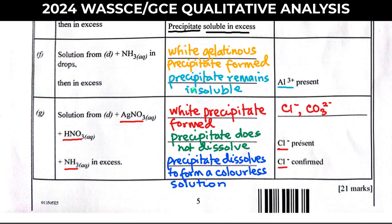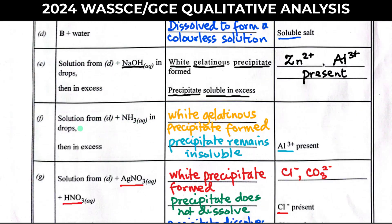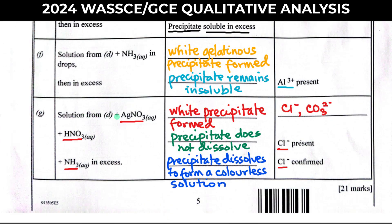The next test: solution from D + ammonia in drops, then in excess. Aluminium ion forms a white gelatinous precipitate with aqueous ammonia in drops, and that precipitate is insoluble in excess ammonia. It is only zinc ion that dissolves in excess aqueous ammonia. So the reaction with aqueous ammonia is used as a confirmatory test for zinc ion. Since it is aluminium ion, the precipitate remains insoluble.